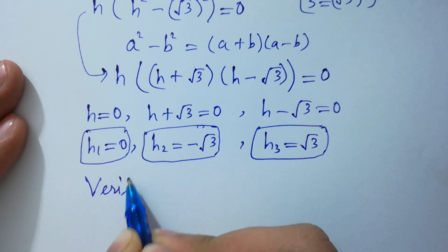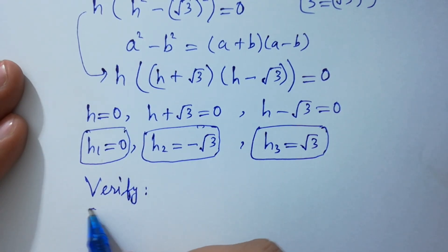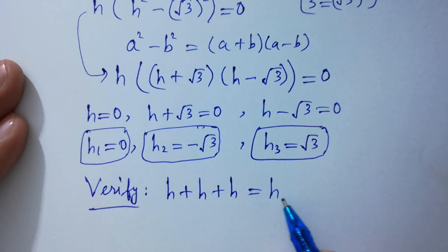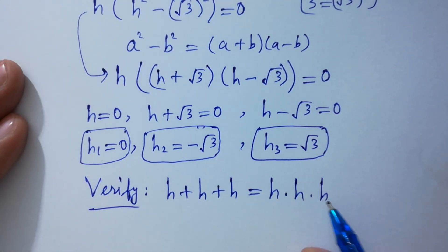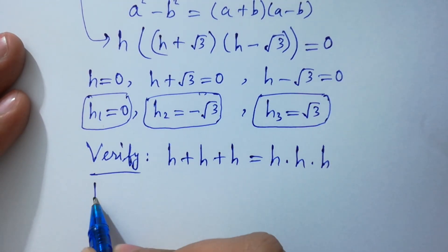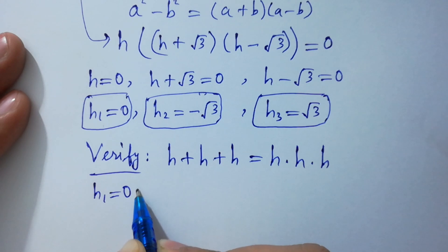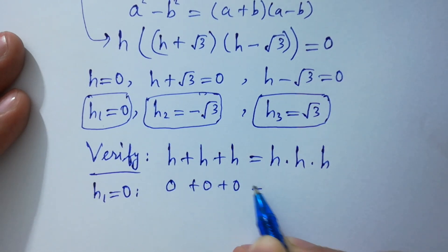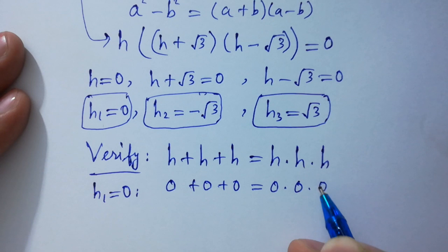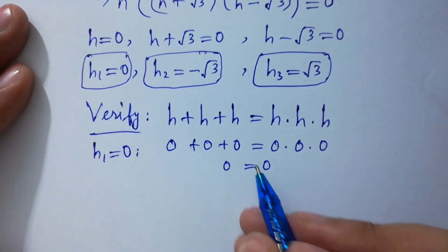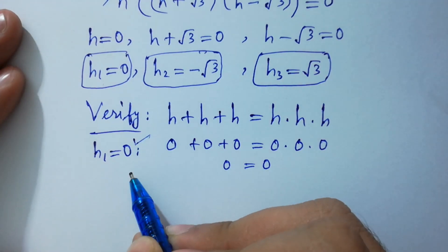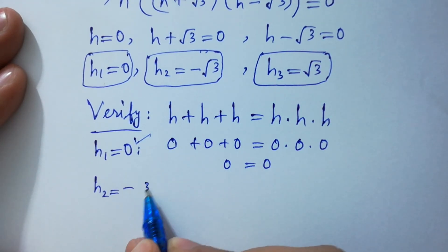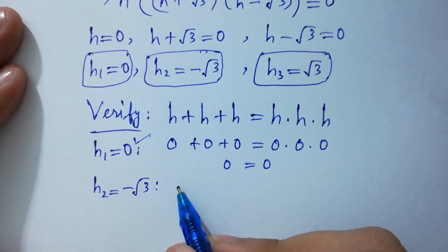Now let's verify. The original equation is h plus h plus h equals h times h times h. Putting h₁ equal to 0: 0 plus 0 plus 0 equals 0 times 0 times 0, giving 0 equal to 0. This shows h₁ equal to 0 is correct.